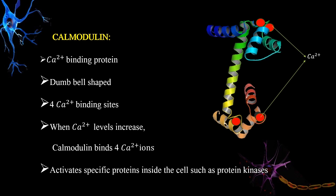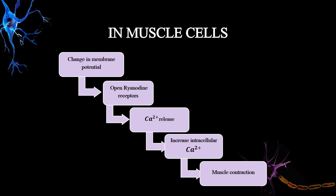How do calcium ions activate specific proteins? Once in the cytosol, calcium ions typically bind to a small protein called calmodulin. Calmodulin is a calcium-ion-binding protein that is dumbbell-shaped and has four calcium-binding sites. Once four calcium ions bind to calmodulin, it activates specific proteins inside the cell such as protein kinases. In muscle cells, changes in membrane potential cause ryanodine receptors to open, releasing calcium ions, increasing intracellular calcium, and activating proteins involved in muscle contraction.